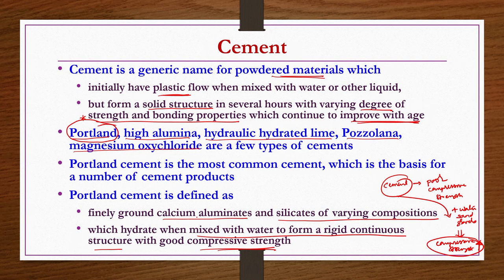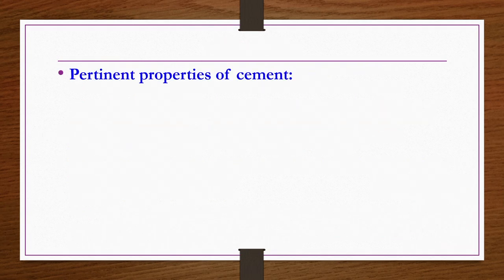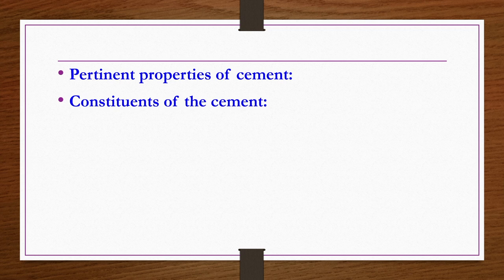Cement is a mixture of different types of powders containing aluminates and silicates. We now look at the constituents of cement so we can understand what exactly these constituents are — which kind of silicates, which kind of aluminates, etc. We will see this for different types of cements, starting with the constituents of Portland cement.